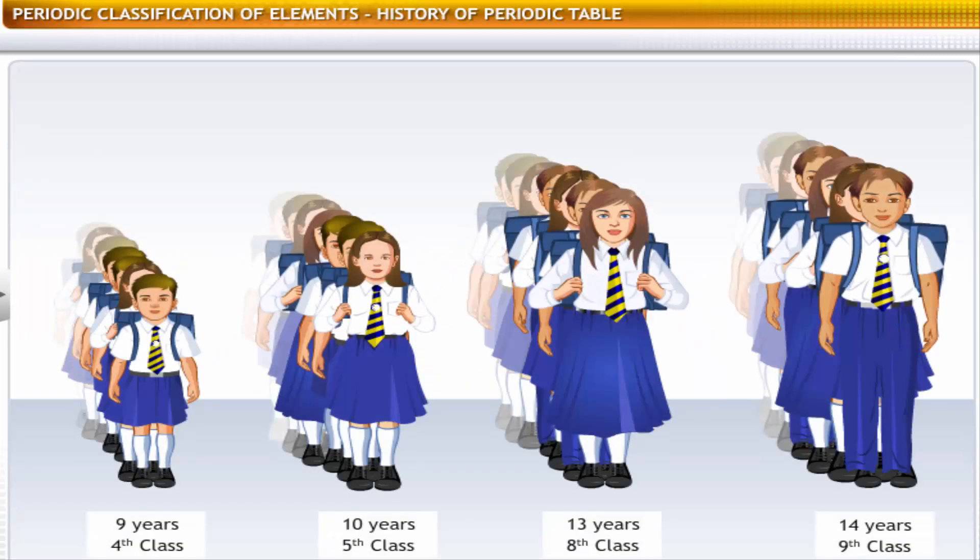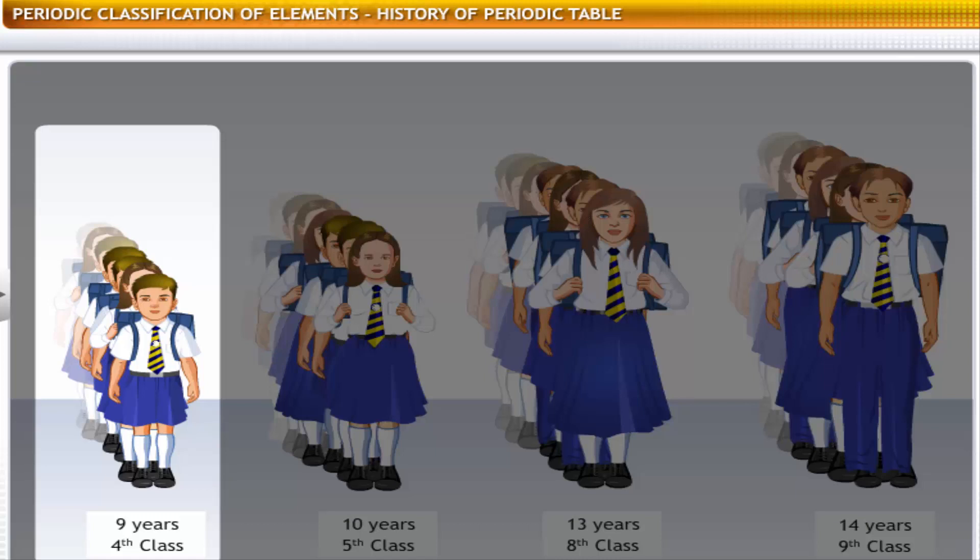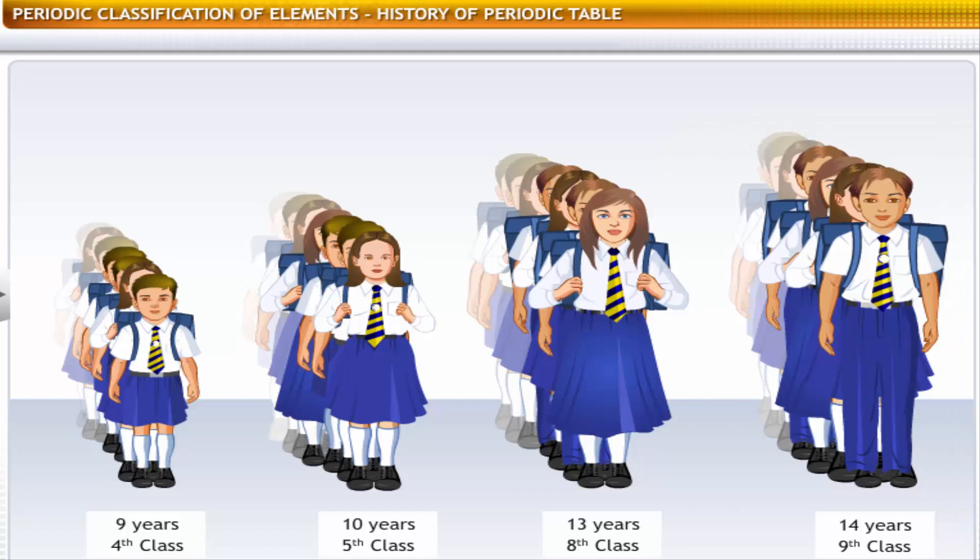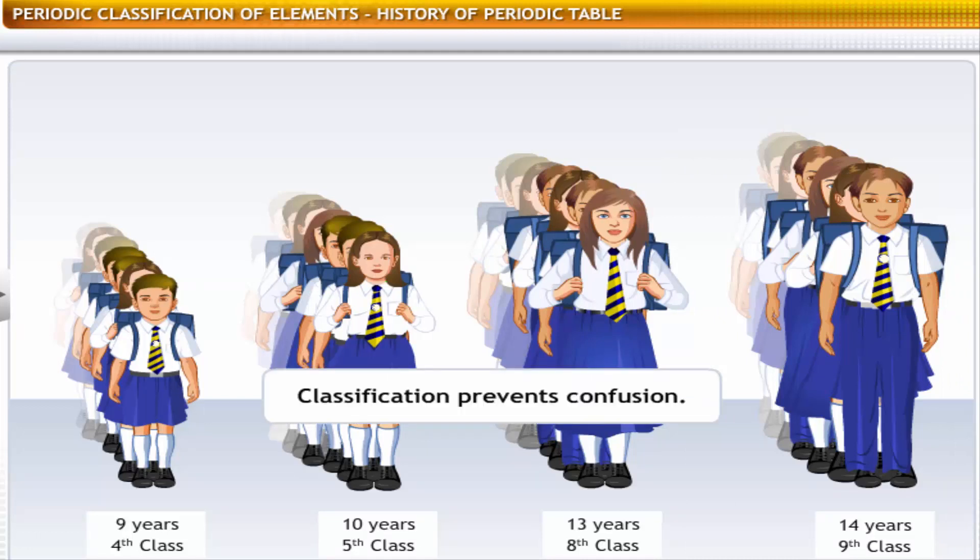Students in a school are allocated to classes based on the age group they belong to. It is because students in a class are likely to have similar attributes in terms of the level of knowledge, capabilities, height, and weight.